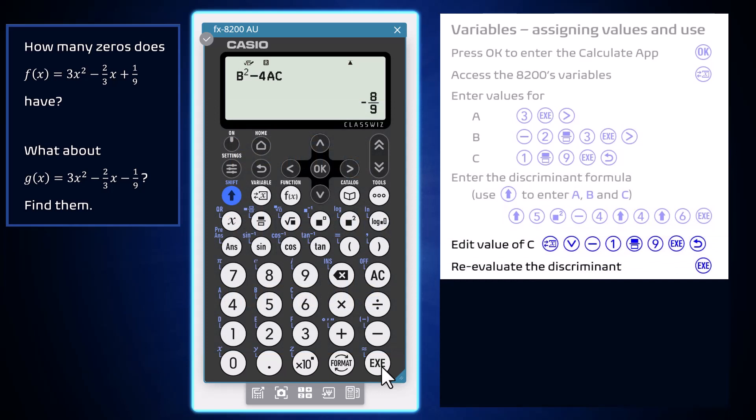Find out about the roots of g of x, meaning to edit the value of C. Press the Variable key to reopen the Variable editor. Arrow down and overtype the new value of C being negative 1 over 9.